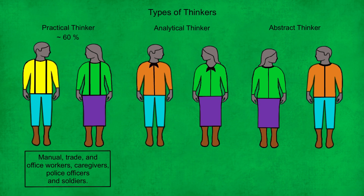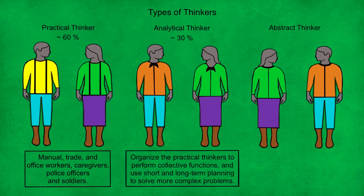Next we have the analytical thinkers, who make up about 30% of any population. These individuals organise the practical thinkers to perform collective functions, and use short and long term planning to solve more complex problems. In a modern society, these individuals would become engineers, architects, business managers, film and theatre directors, teachers, senior priests or monks, etc.